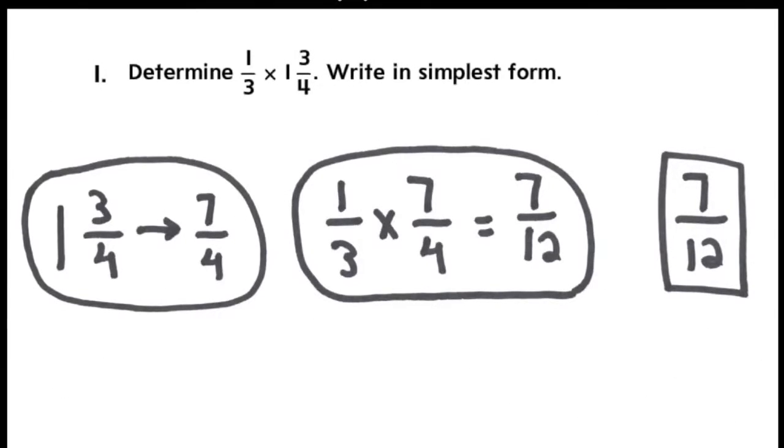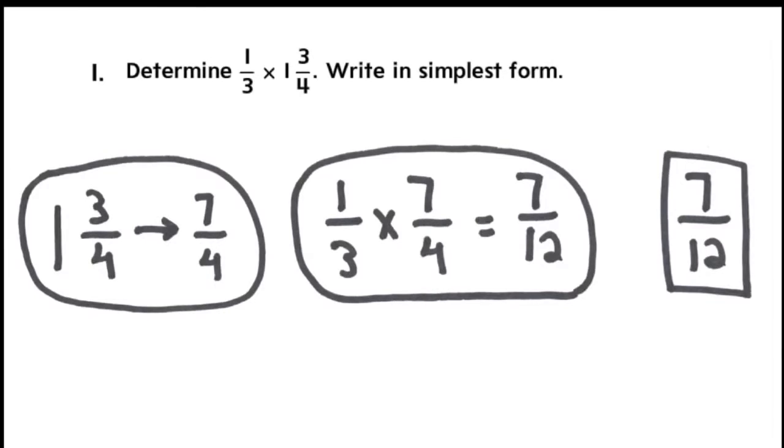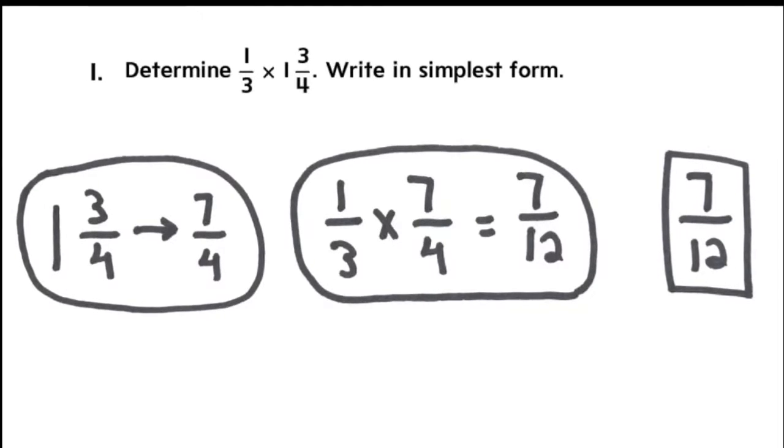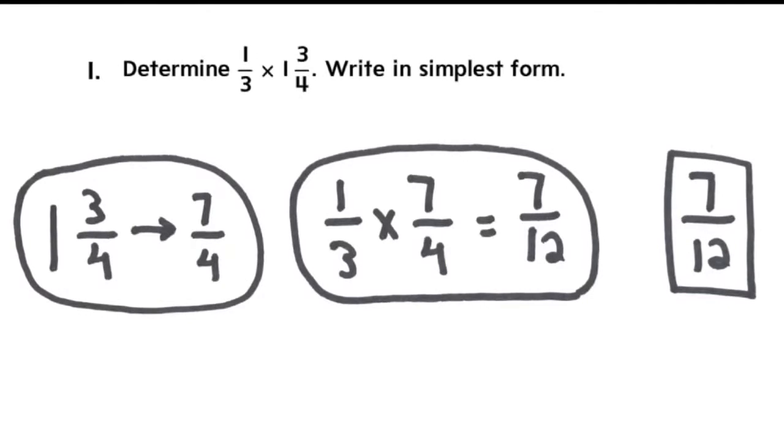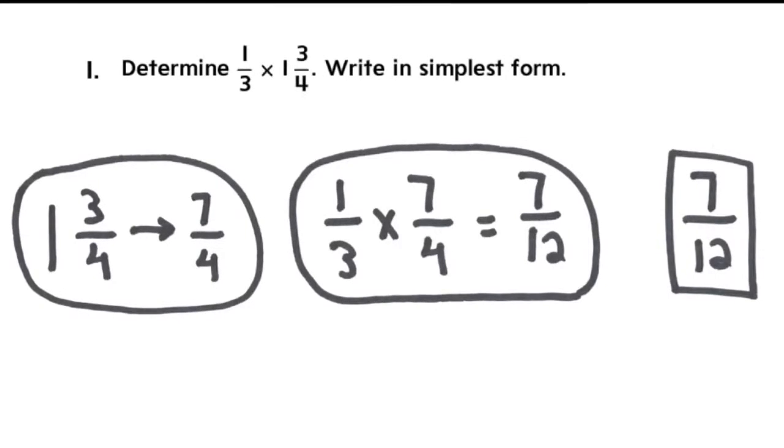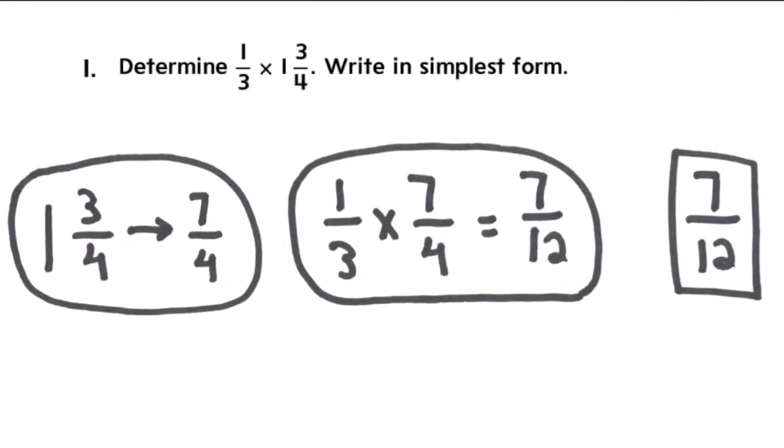The first thing you have to do in this problem is turn your mixed number into an improper fraction. And that would be by using MAD. You multiply 4 times 1, add 3, and you end up with 7. And then you drag your denominator below it, so it becomes 7 fourths.